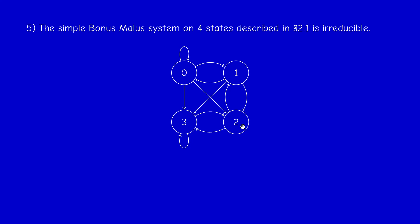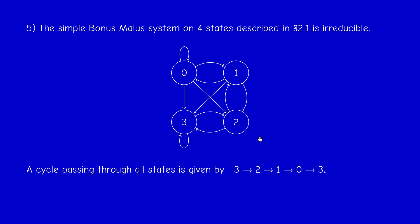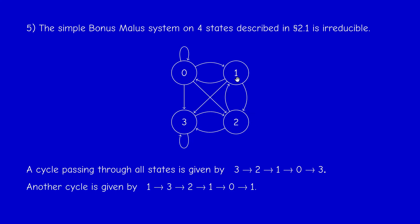Last example: the simple bonus-malus system on four states described previously. I didn't put the probabilities because they are a bit complicated, but I draw an arrow only if there is a positive probability. You can find many cycles: for example, three → two → one → zero → three following the arrows. We can also go one → three → two → one → zero → one. The first cycle is Hamiltonian and the second is not — but don't worry about Hamiltonicity, you don't need that.